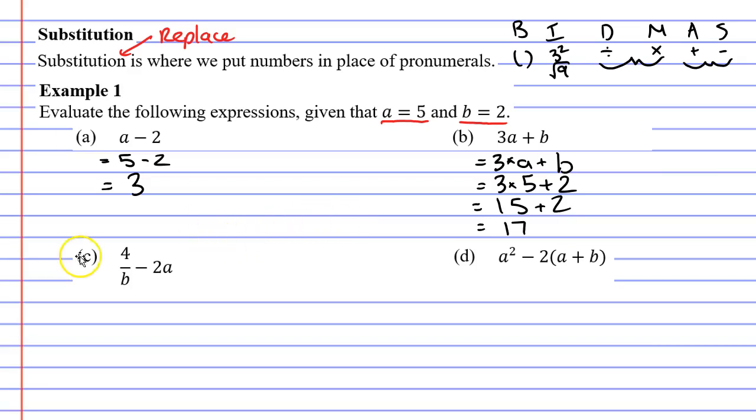Let's now move on to question C. We have 4 over b minus 2a. Remembering that 4 over b is division and 2a is the same as saying 2 times a. Let's now substitute numbers in place of pronumerals. We know that b is 2 and a is 5.